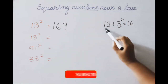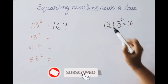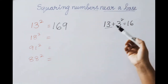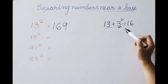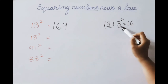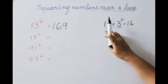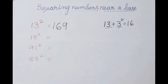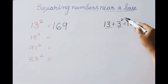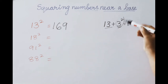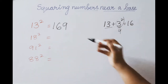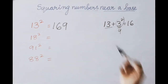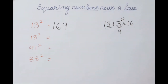Once again: 13 squared, given number is 13, nearer to base 10. 10 plus 3 is 13, so 3 is the excess value. We add: 13 plus 3 is 16 — first part answer is 16. Now square the excess value: 3 squared is 9 — that is the second part. So 13 squared is 169. Next example: 18 squared.